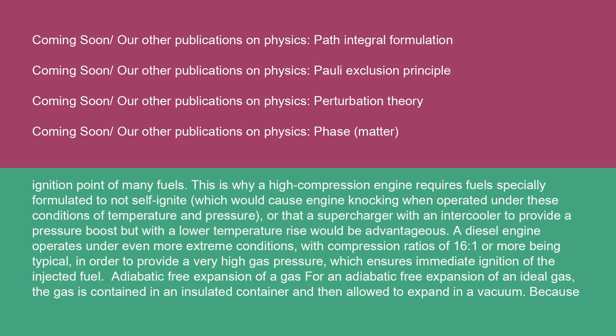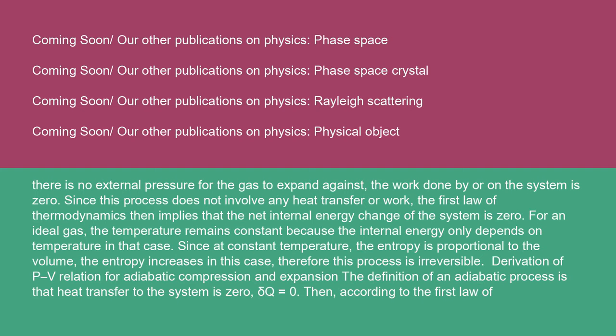Adiabatic free expansion of a gas: for an adiabatic free expansion of an ideal gas, the gas is contained in an insulated container and then allowed to expand in a vacuum. Because there is no external pressure for the gas to expand against, the work done by or on the system is zero. Since this process does not involve any heat transfer or work, the first law of thermodynamics implies that the net internal energy change of the system is zero. For an ideal gas, the temperature remains constant because the internal energy only depends on temperature. Since at constant temperature the entropy is proportional to the volume, the entropy increases in this case. Therefore, this process is irreversible.